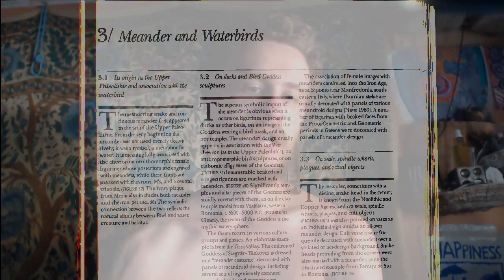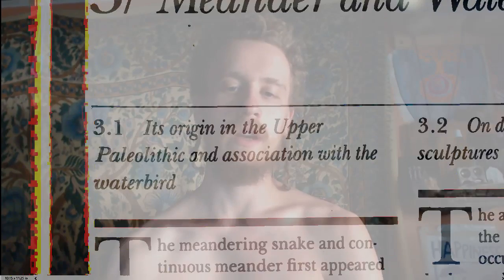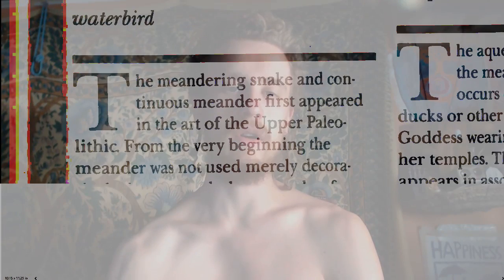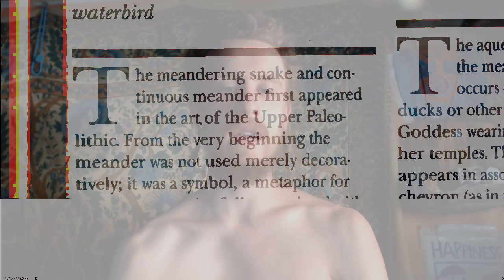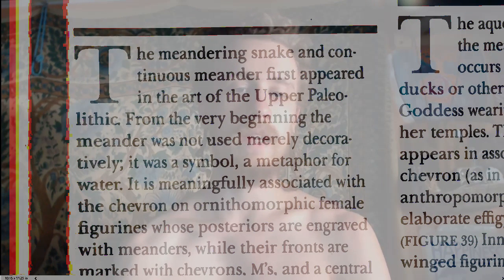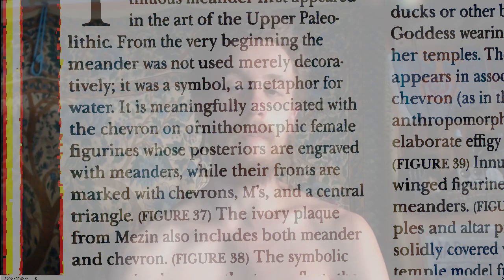Chapter three: meanders and water birds — its origin in the Upper Paleolithic and association with the water bird. The meandering snake and continuous meander first appeared in the art of the Upper Paleolithic. From the very beginning, the meander was not used merely decoratively; it was a symbol, a metaphor for water.